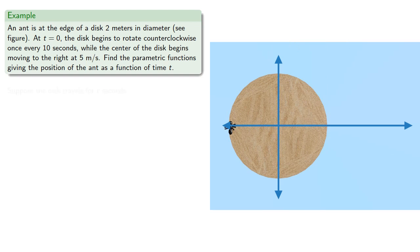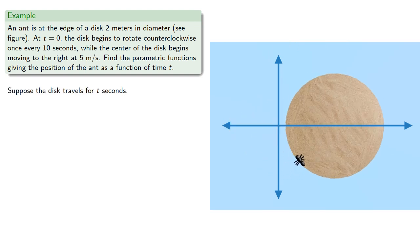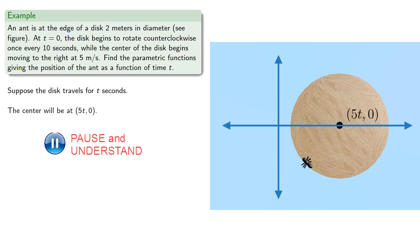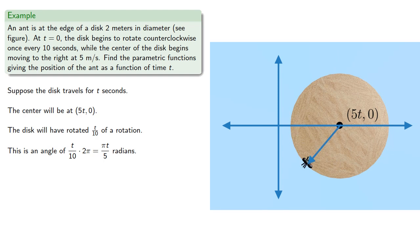Suppose the disk travels for t seconds. The center will be at the position 5t, 0. The disk will have rotated t tenths of a rotation, and this corresponds to an angle of t tenths of 2π, or πt/5 radians. So the line between the center of the disk and the ant makes an angle of πt/5 radians with the x-axis.